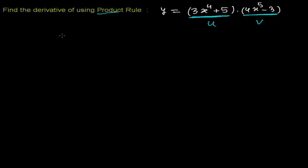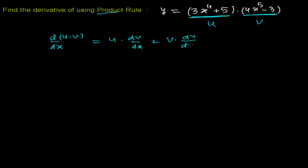We know the formula of the product rule: if you have to find out the derivative of the product of two functions u and v with respect to x, then the derivative of u times v will be: write the first function times the derivative of the second function, then add the second function times the derivative of the first function. This is the product rule and using this rule we are going to solve this problem.